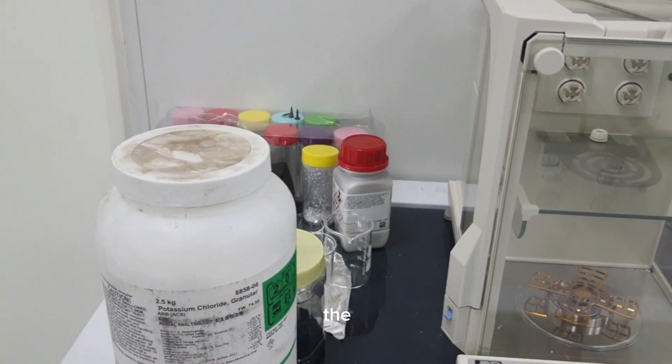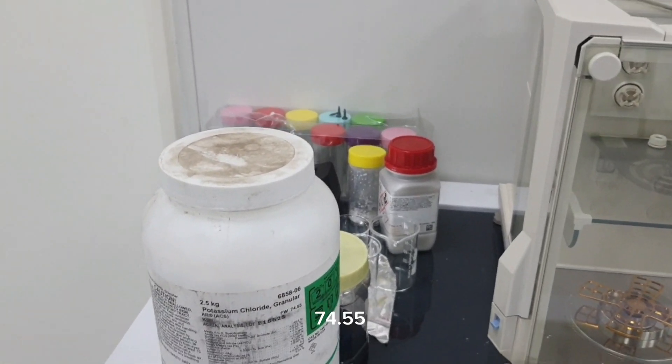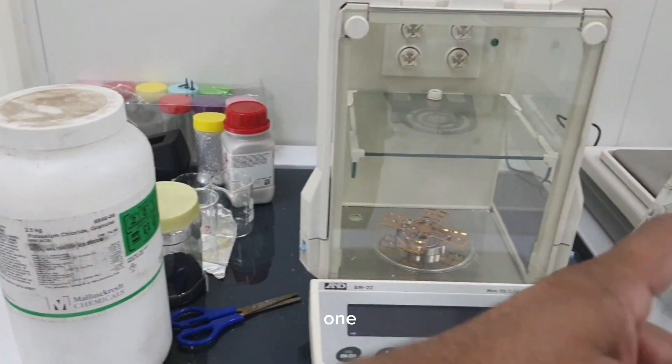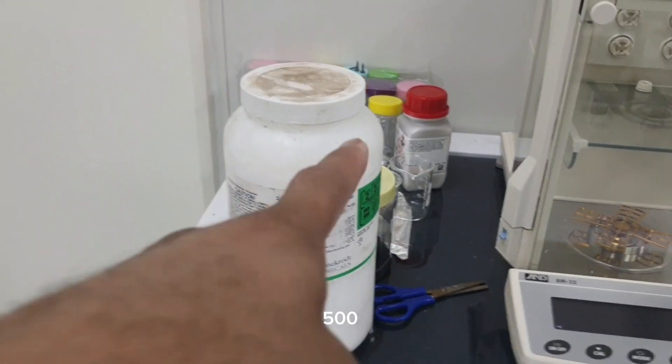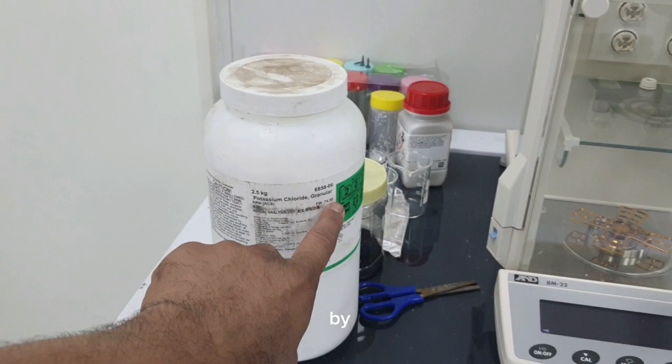To prepare one molar of potassium chloride, the formula weight is 74.55, so we dissolve this mass in one liter. If you want to prepare 500 ml, divide by 2, or for 250 ml, divide by 4.